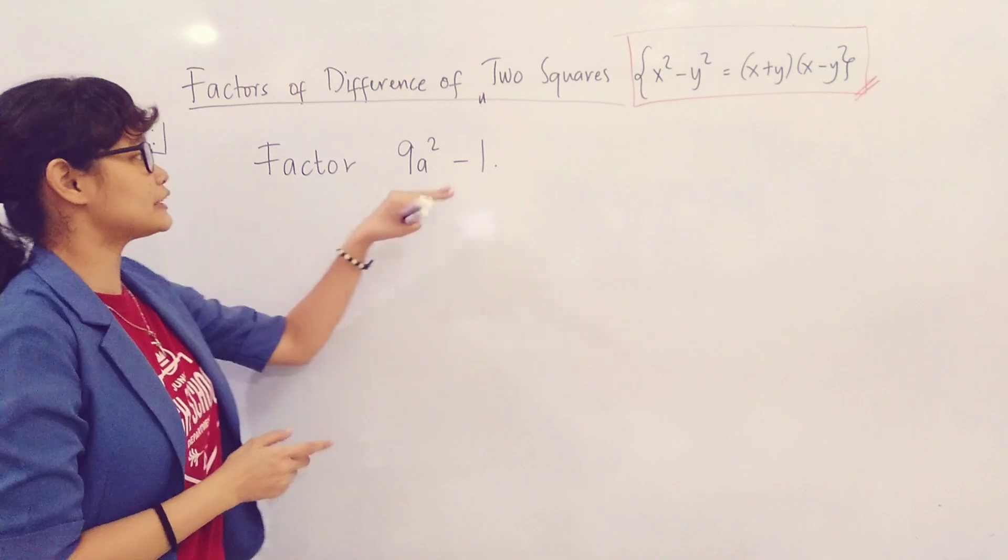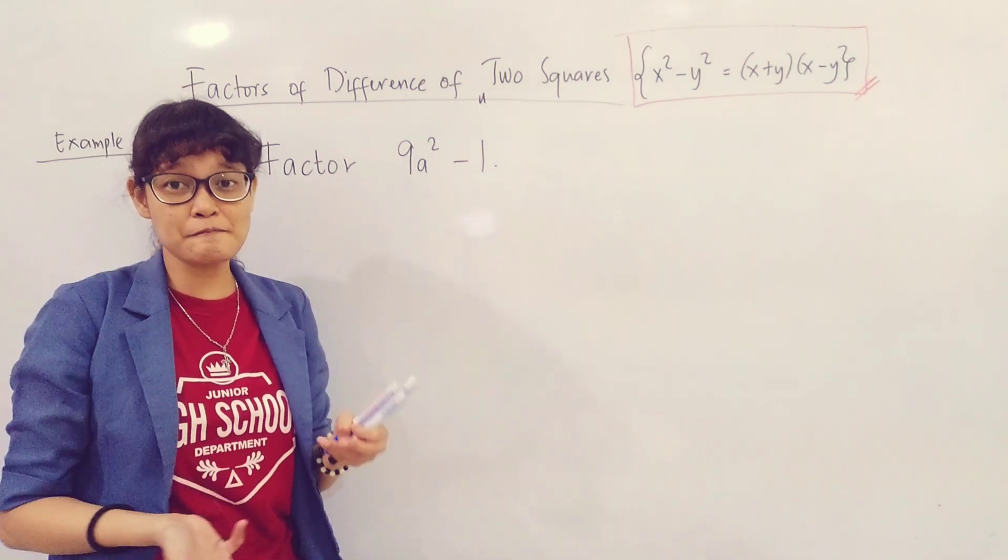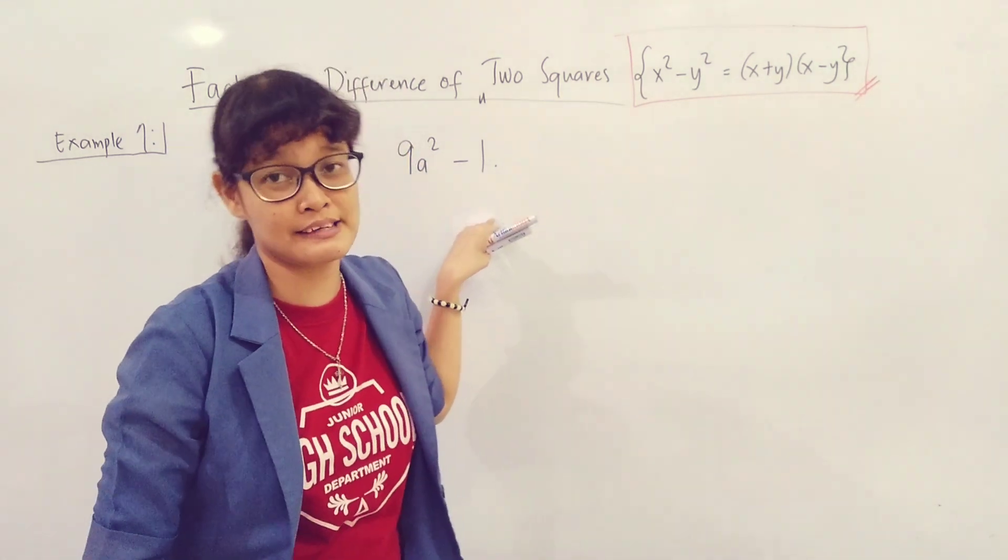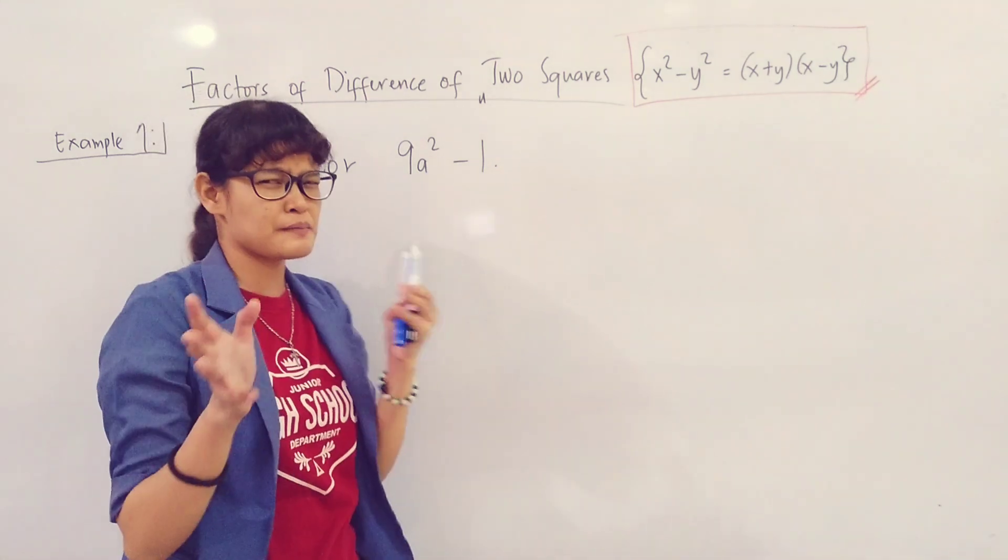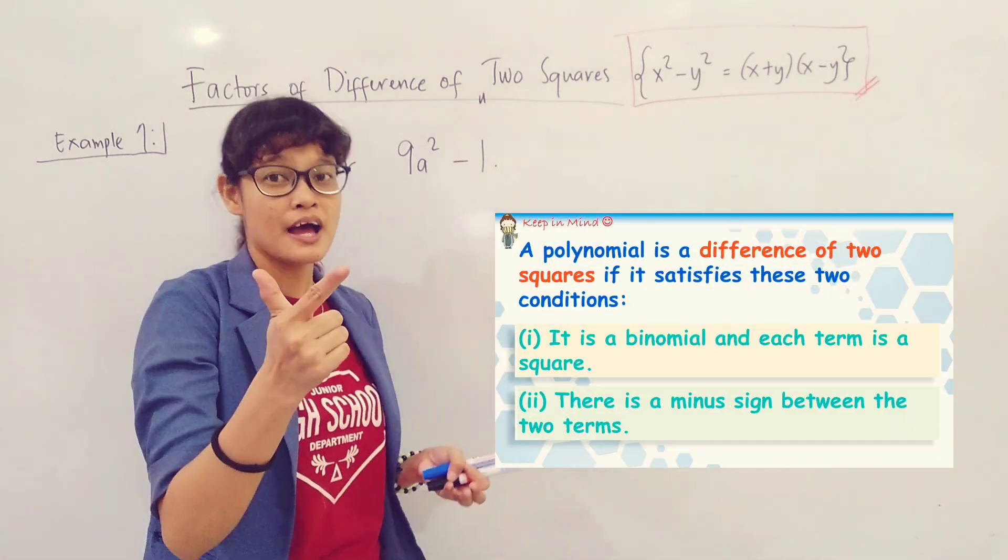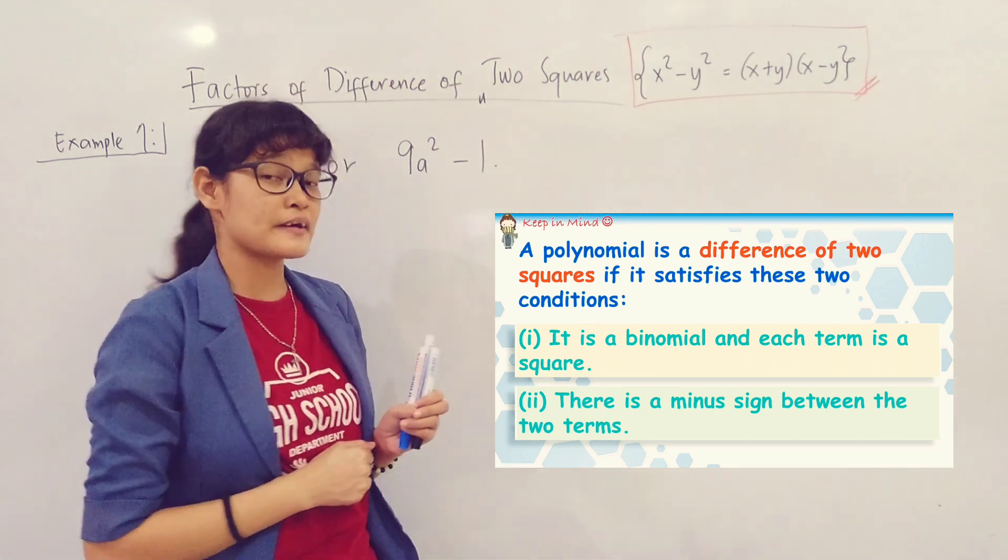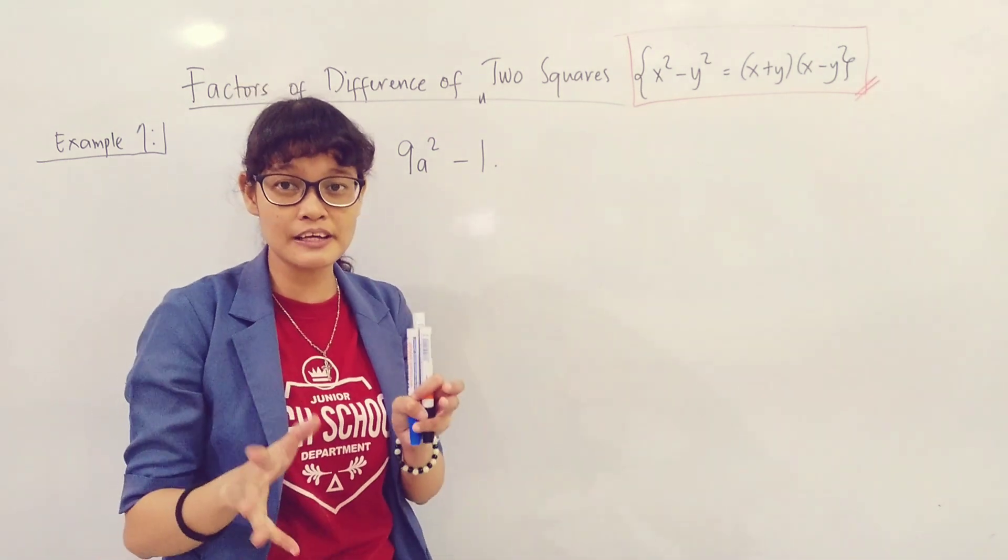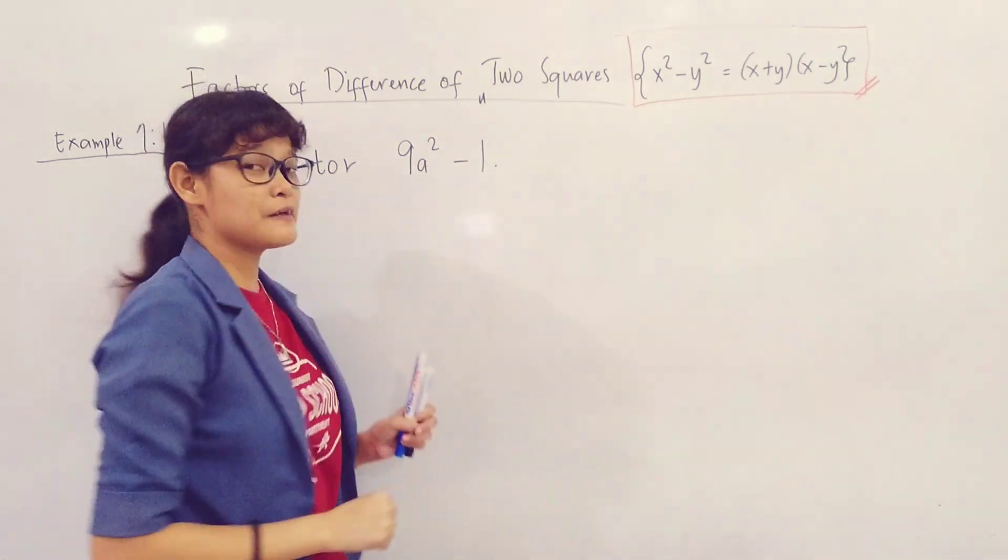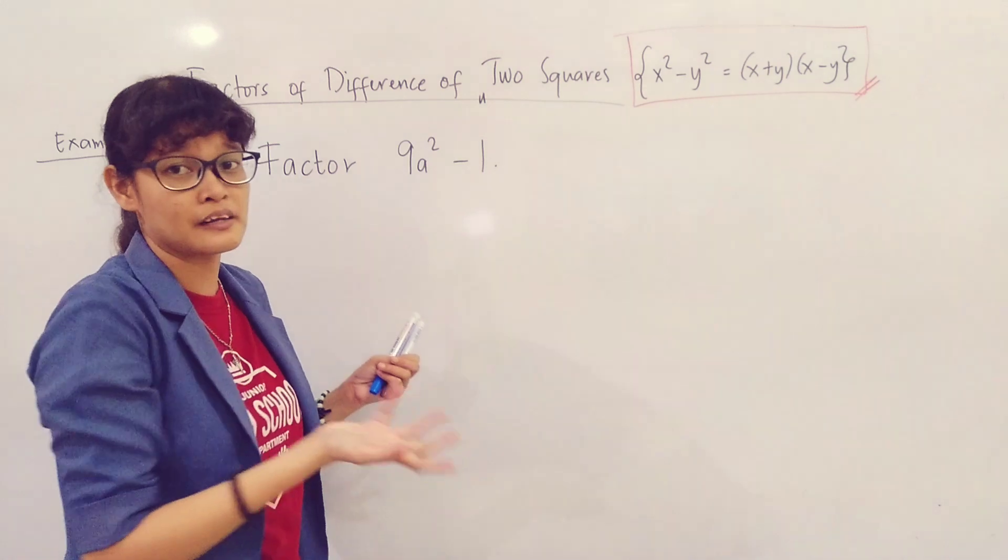Let's work on the first example. You have factor 9a squared minus 1. Of course, you shouldn't just proceed to factoring. You need to know if it's really DTS, because this rule only applies when the given polynomial is DTS. You'll know it's DTS. First, it's a binomial. Second, the first and the last terms are both perfect squares. And third, it is always separated by a minus sign.